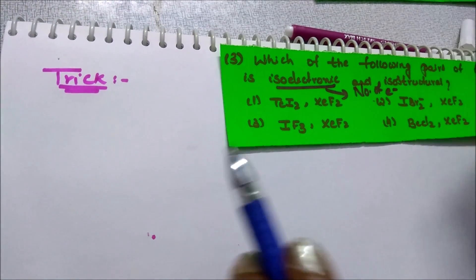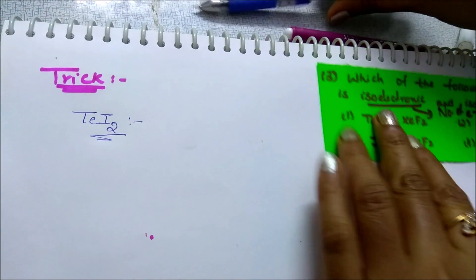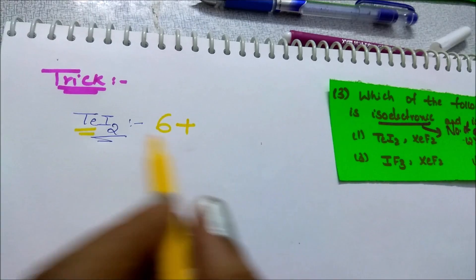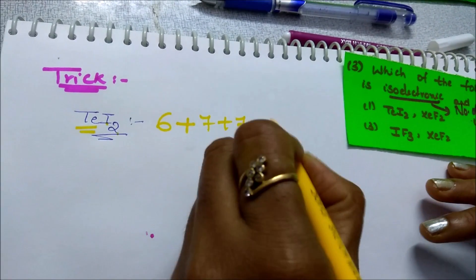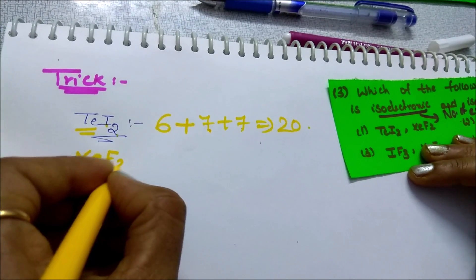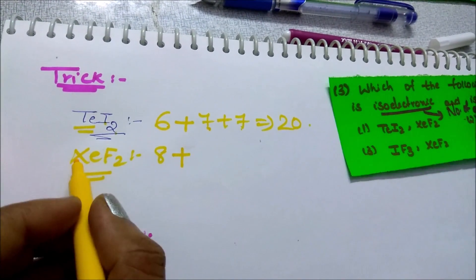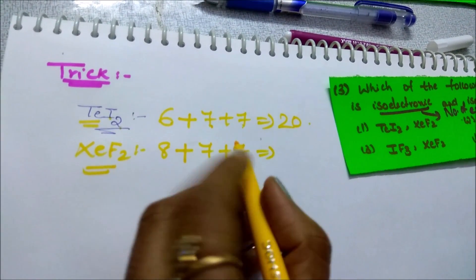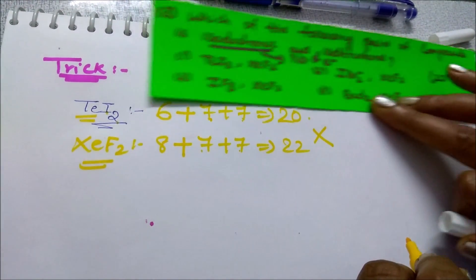For example, TeI2: tellurium is in group 6, so 6 valence electrons. Iodine has 7 valence electrons, and there are 2 iodines, so 7+7=14. Total: 14+6=20. For XeF2: xenon is in group 18, so 8 valence electrons. Fluorine has 7 each, 7+7=14. Total: 14+8=22. So TeI2 and XeF2 are not isoelectronic — they don't have the same number of valence electrons.